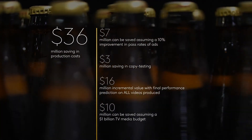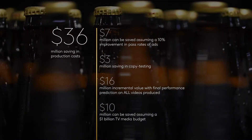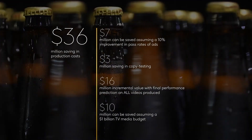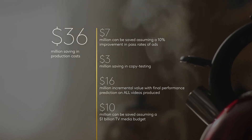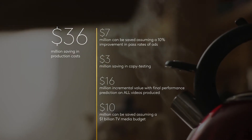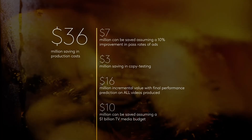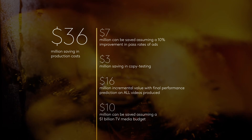Approximately $7 million could be saved, assuming a 10% improvement in pass rates of ads due to iterative development enabled by the tool. Approximately $3 million in copy testing could be saved relative to 2018 spend due to movement of testing budget earlier in the process, with an incremental value of $16 million due to the tool being able to predict final performance for all videos produced. Finally, approximately $10 million could be saved, assuming a $1 billion TV media budget with an improvement in creative's impact on sales due to improved quality.